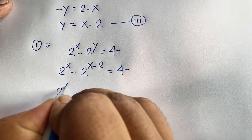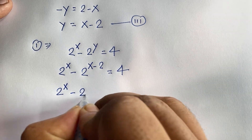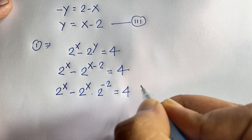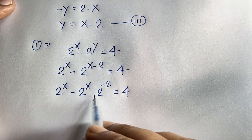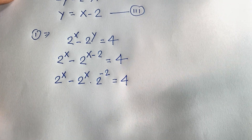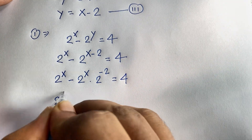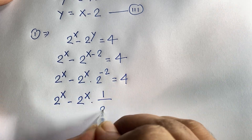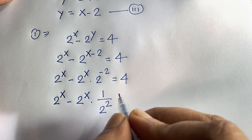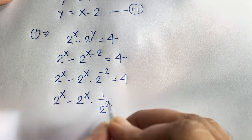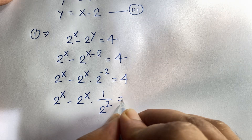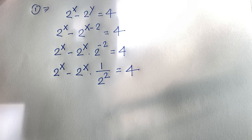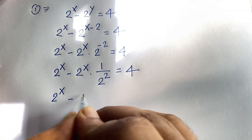Now I can write this as 2 to the power x minus 2 to the power x times 2 to the power minus 2, equal to 4, according to exponential law — that is, a to the power (a minus b) equals a to the power a times a to the power minus b. Since 2 to the power minus 2 equals 1 over 2 to the power 2, the equation becomes 2 to the power x minus 2 to the power x over 4 equals 4.